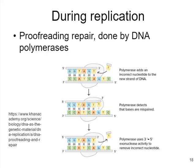Let's think about repair systems that happen during replication of DNA. One of the major ways that we repair damage to DNA that's happened during replication is something called proofreading repair. This is done by DNA polymerase itself. DNA polymerases are pretty amazing enzymes — they can do synthesis, and they can fix mistakes that they make themselves.